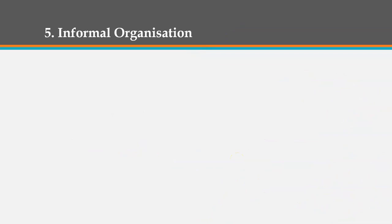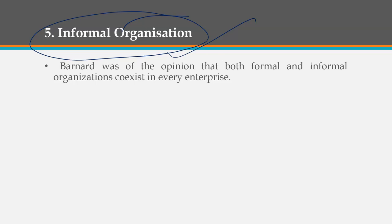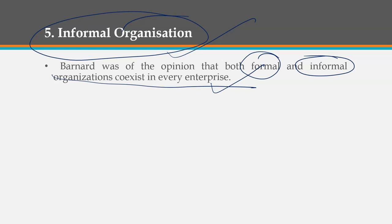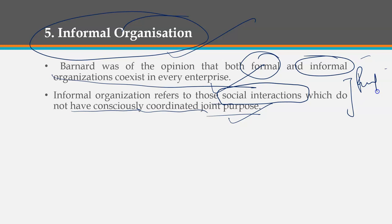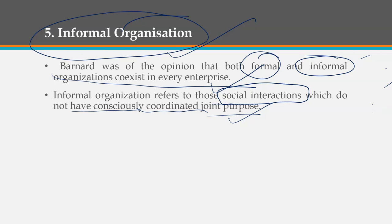The fifth and last contribution was informal organization. Chester Bernard believed that formal and informal organizations co-exist within every organization. Even if the outer surface of an organization appears formal, there is always an informal organization inside it. Informal organization is all about social interaction which does not have a consciously coordinated joint purpose. As we work in an organization, we interact and talk with many people and create informal relationships — these happen without deliberately setting a goal, yet they occur naturally and sometimes even dominate the organization.